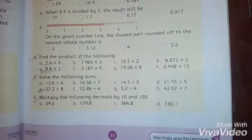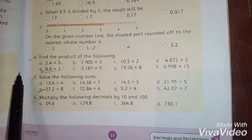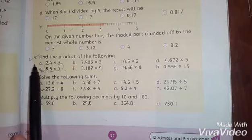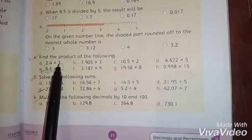Students, now open your book. Page number 77. Now I'm going to start question number 4. Question number 4 is find the product of the following. Part A, 2.4 multiply by 3.